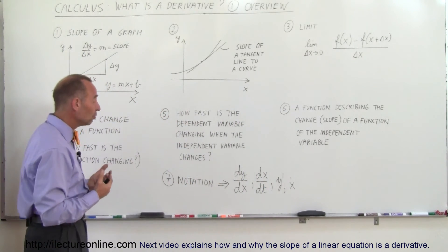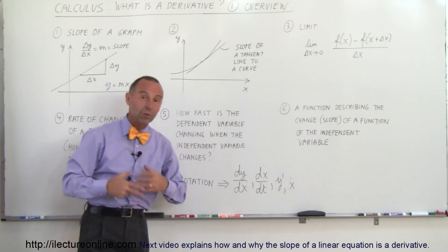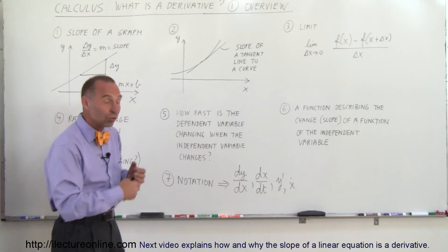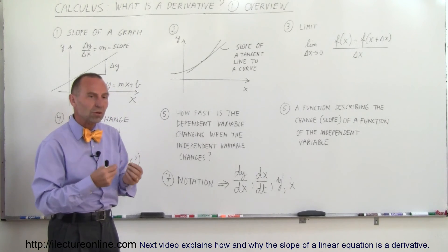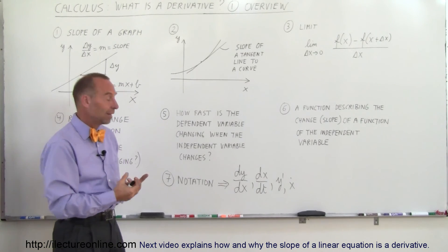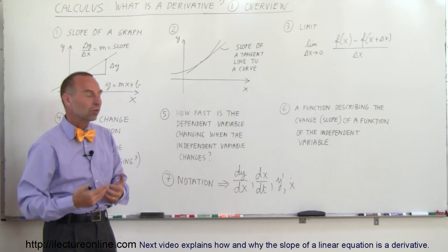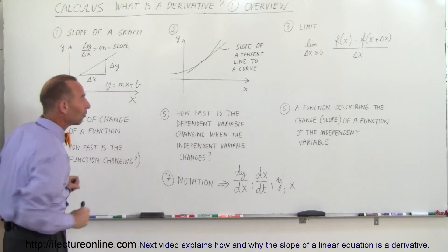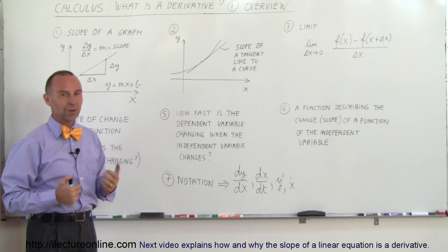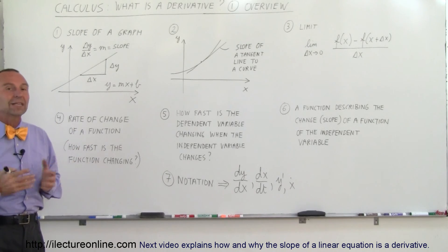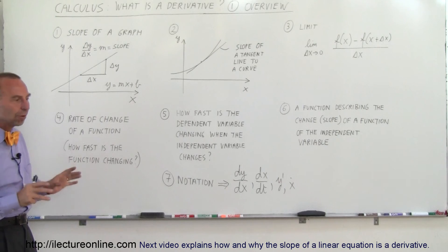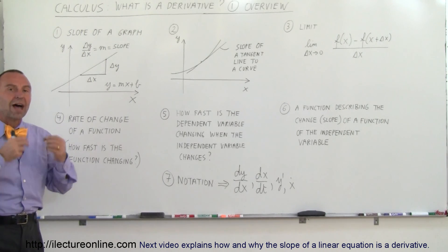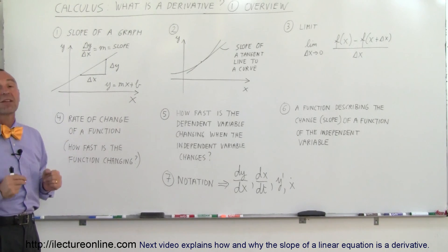Finally, what also makes derivatives confusing is the notation. There are four different ways of notating a derivative shown here — dy/dx, dx/dt, y prime, x dot — different ways, and there are more. There are all kinds of different ways to write a derivative in mathematical form, and since there are so many it gets very confusing. We'll shoot a video showing each of these different ways of writing it and what it means. Hopefully after you watch all seven videos that follow this one, you'll have a much better understanding of what a derivative is. If it all boils down to one thing, a derivative is the rate of change of the function — how fast is the function changing — and that is probably the best definition of what a derivative is.